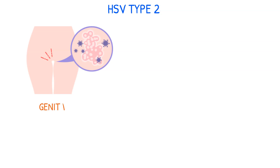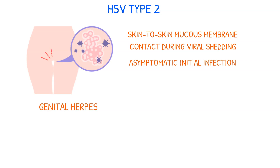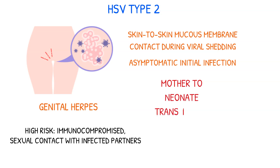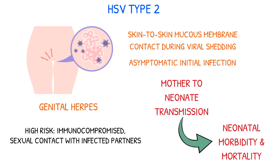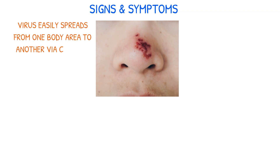Genital herpes infections are most commonly caused by HSV-2. The virus is transmitted through skin-to-skin or mucous membrane contact during viral shedding. HSV-2 infections usually begin with an asymptomatic initial infection. Those at higher risk include immunocompromised individuals or those engaging in sexual contact with infected partners. Critical transmission from mother to neonate can result in significant neonatal morbidity and mortality. Herpes infections can easily spread from one body area to another through contact.